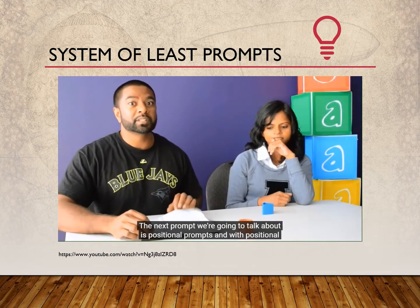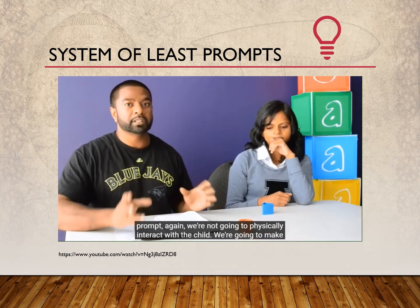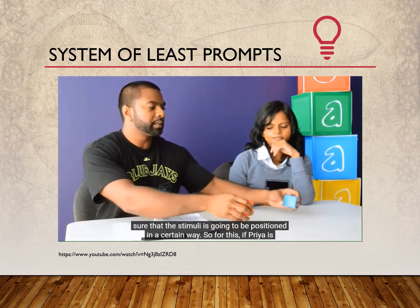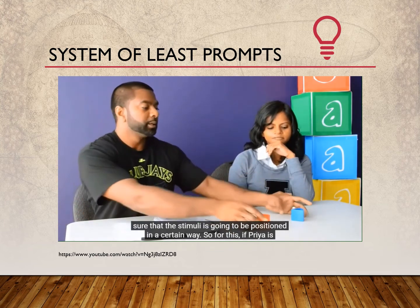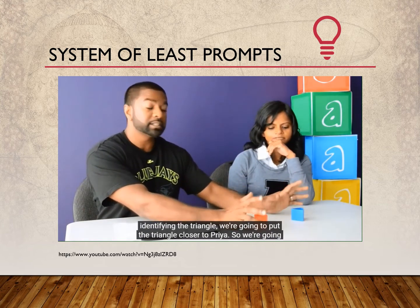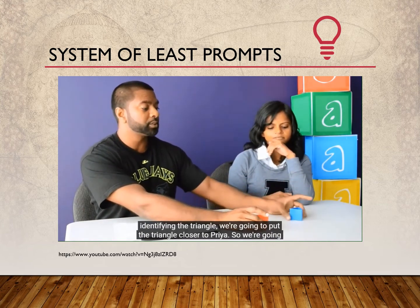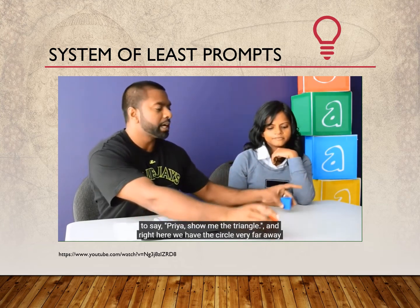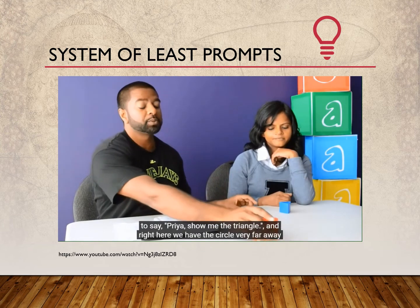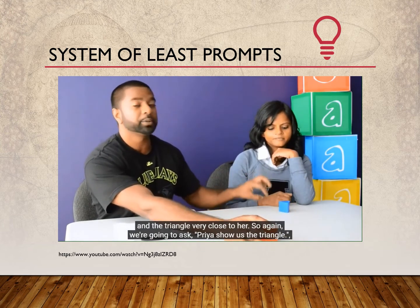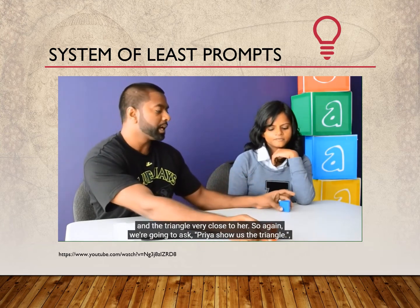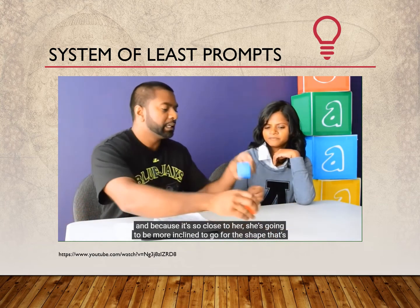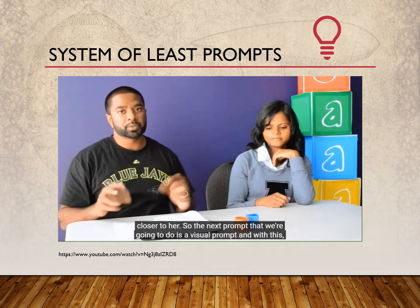The next prompt is a positional prompt. With a positional prompt, we're not going to physically interact with the child — instead, we're going to make sure that the stimuli is positioned in a certain way. So if Priya is identifying the triangle, we put the triangle closer to Priya. We ask her to show us the triangle, and because it's so close to her, she's going to be more inclined to reach for the shape that's nearest to her.